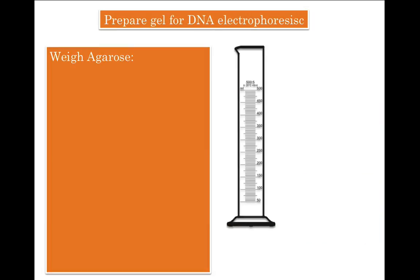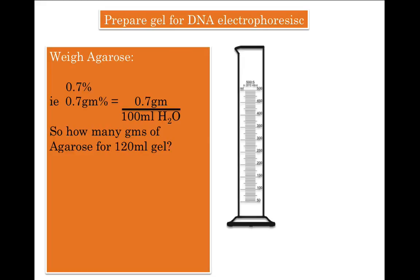Let's start the calculation with agarose. We need to make 0.7% agarose, that is 0.7 g per 100 ml of water. But your gel case holds 120 ml instead of 100 ml, which is why we want to make 120 ml of gel. So you need 0.7 grams of agarose for 100 ml of buffer, and we need to find how many grams are needed for 120 ml. It's a directly proportional relationship.